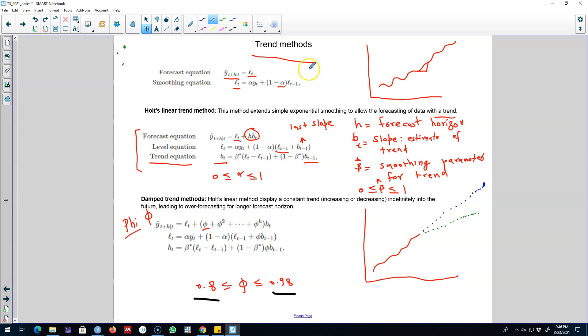So we can either use a Holt's linear trend method or we can use damped trend method in which we'll say that trend will be damped in the long run. So in the next video, I'll talk about how to incorporate seasonality in exponential smoothing. All right, I'll see you in the next video. Bye bye.